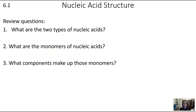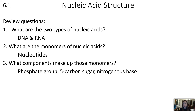Now let's jump from an overview into some specifics about nucleic acids. The two types of nucleic acids are RNA and DNA. The monomers of those nucleic acids are nucleotides, and the components of those monomers are a phosphate group, a 5-carbon sugar, and a nitrogenous base.